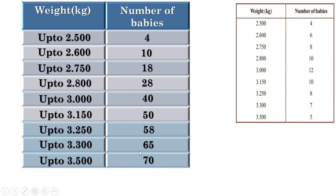The total number of babies is 70. It is an even number. Therefore, there are 2 babies at the middle when they are arranged according to birth weight — the 35th and 36th babies. The 35th and 36th babies are at the middle.